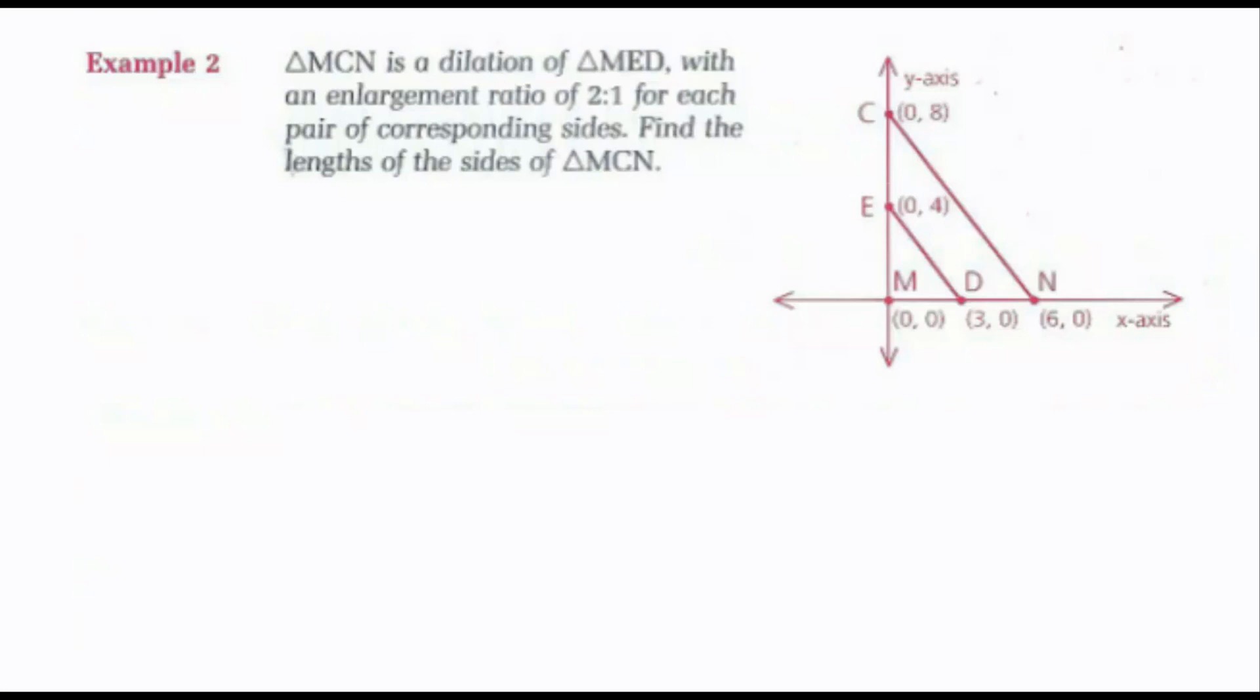Looking at example 2, we have triangle MCN is a dilation of triangle MED with an enlargement ratio of 2 to 1 for each pair of corresponding sides. Find the length of the sides of triangle MCN. So I'd want to find side length MN, side length CM, and side length CN. I can tell side length MN goes from 0 to 6, so this is a side length of 6. Side length CM goes from 0 to 8, so this is a side length of 8. I know this is a right triangle because one of my legs is the y-axis, and the other leg is the x-axis. The y and x-axis are perpendicular, therefore this is a right triangle.